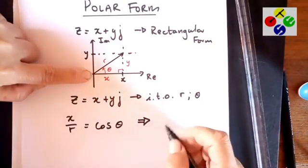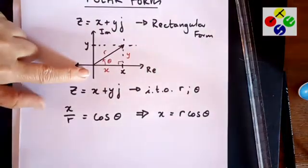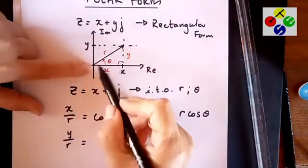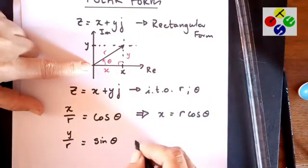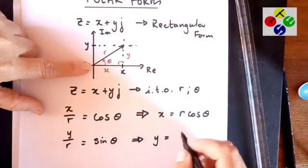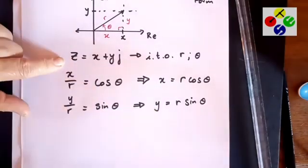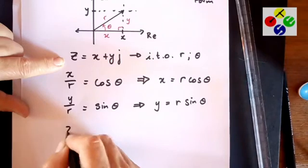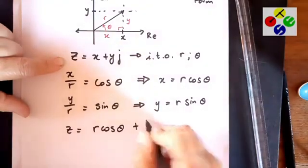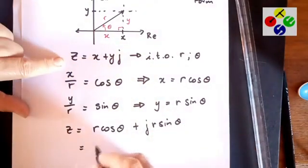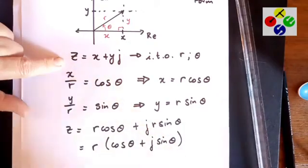That means that x is R cos theta. Y over R is going to be opposite over hypotenuse, which is going to be sine of theta. And that means that your y value is going to be R sine theta. So if I take the complex number in rectangular form and I now substitute the values of x and y, you're going to get Z equals R cos theta plus jR sine theta, which can be written as R(cos theta plus j sine theta).